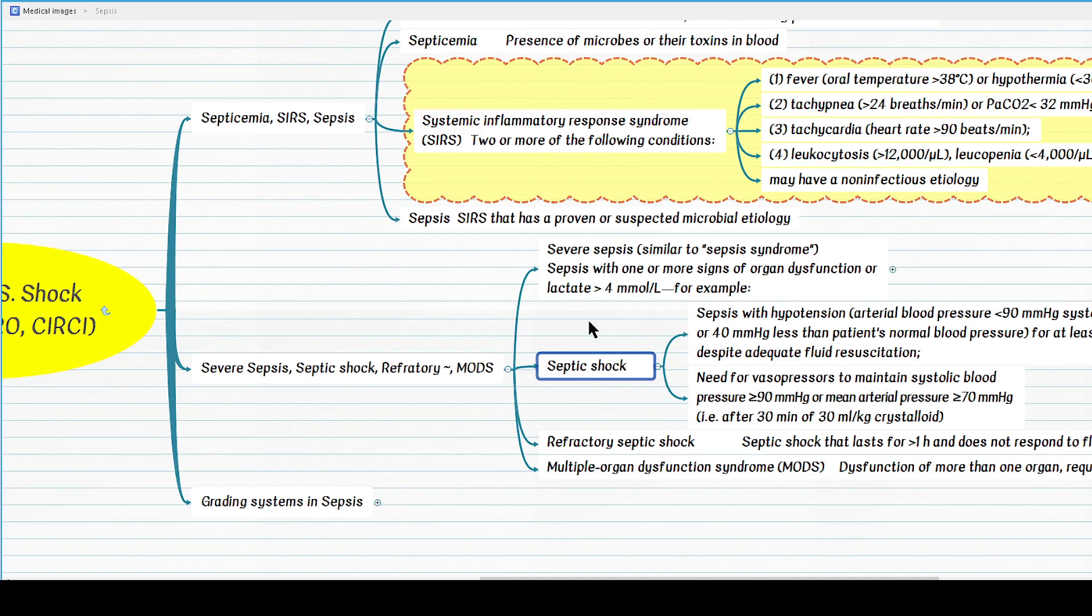By the way, what is the definition of adequate resuscitation? That is 30 ml per kg crystalloid fluids given usually as a bolus within one to three hours.